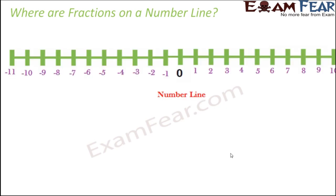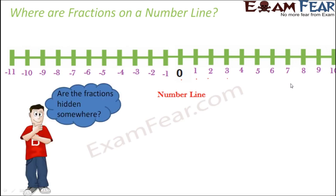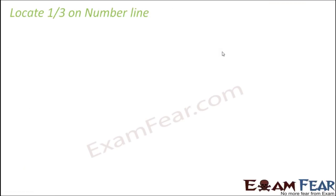Now that we have a fair idea about fractions, where are fractions located on the number line? When we look at the number line we see whole numbers — zero, one, two, three — and integers including negative numbers, but we don't see fractions. Fractions are present in between the integers. Let's learn how to locate them.